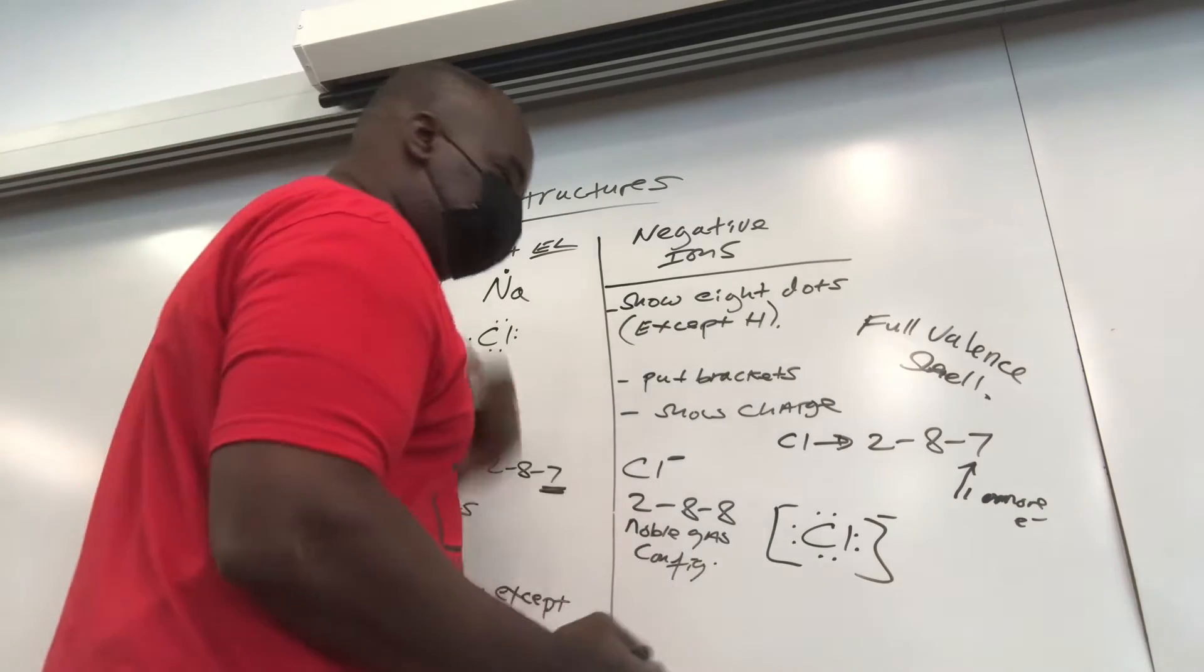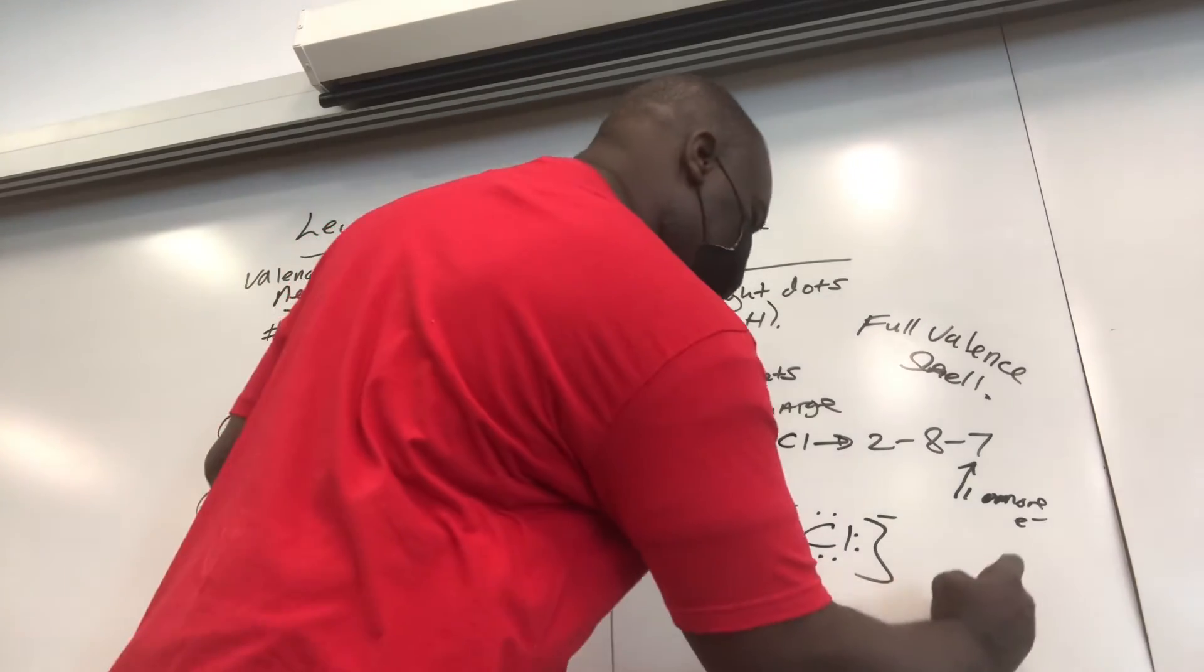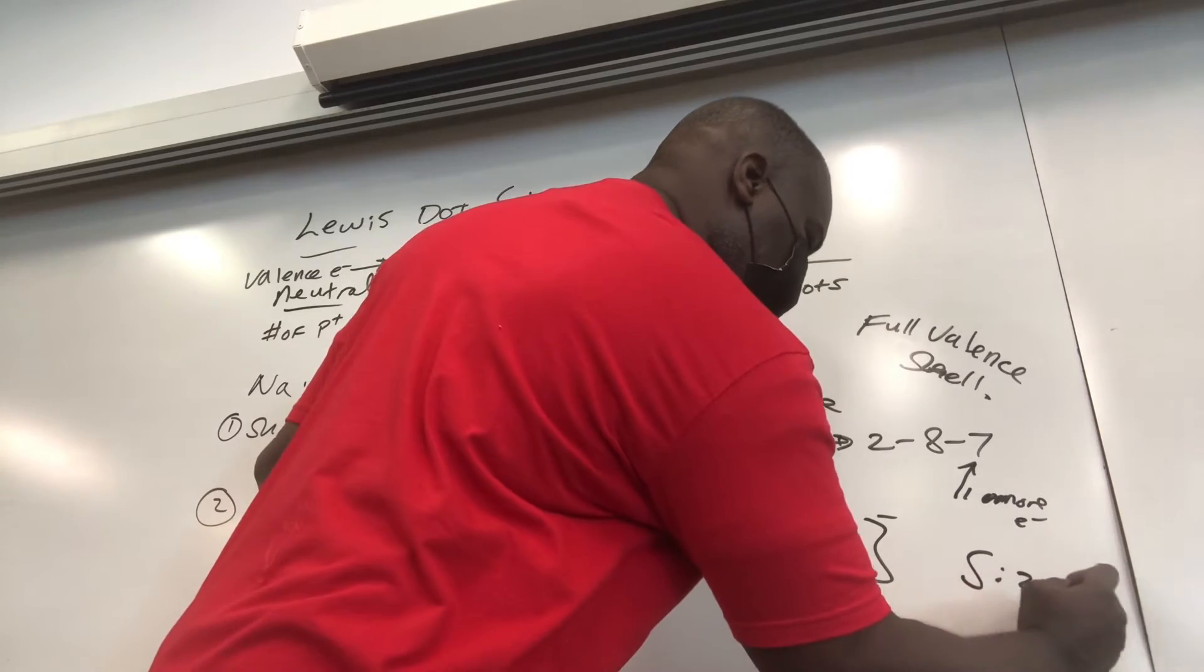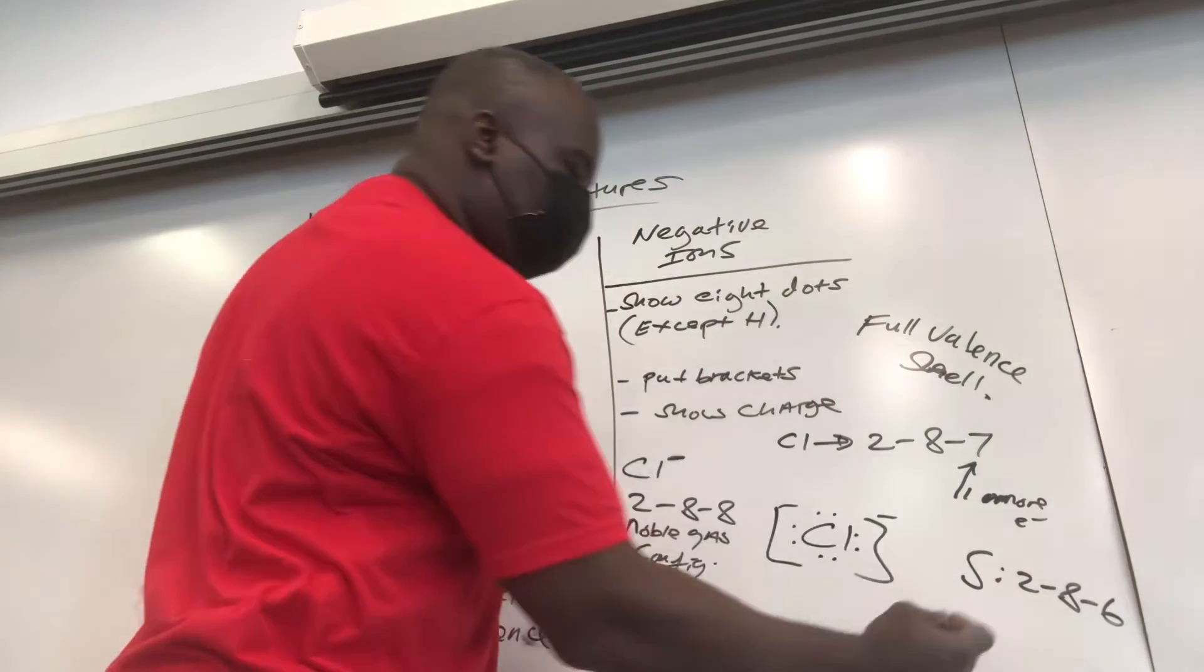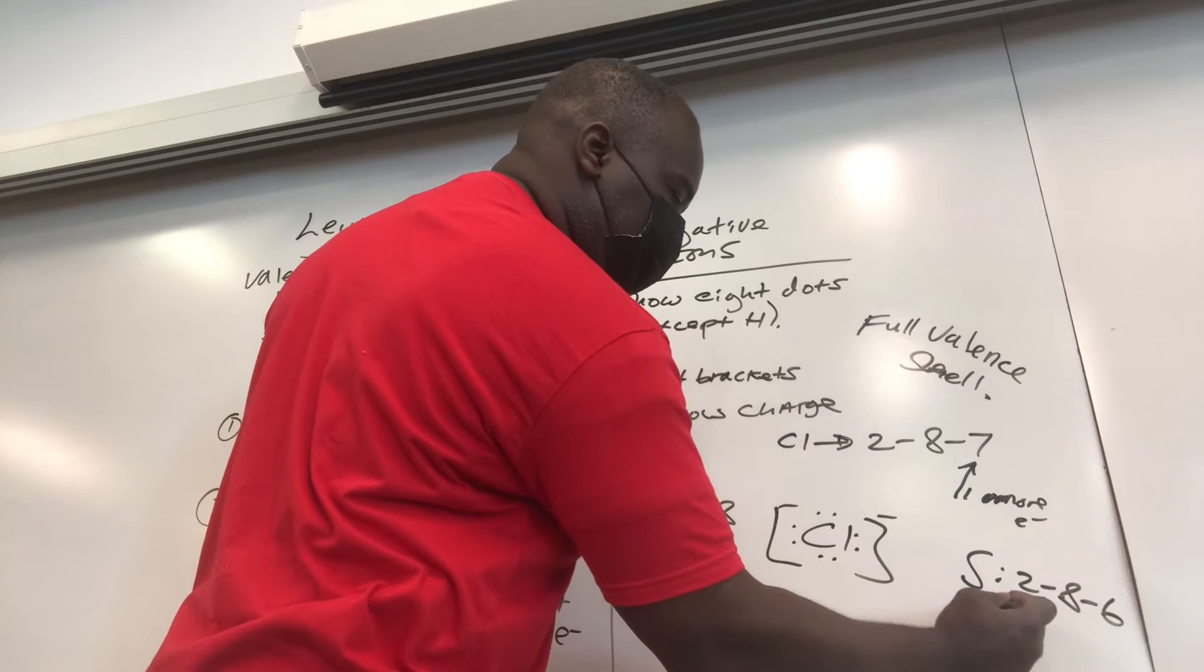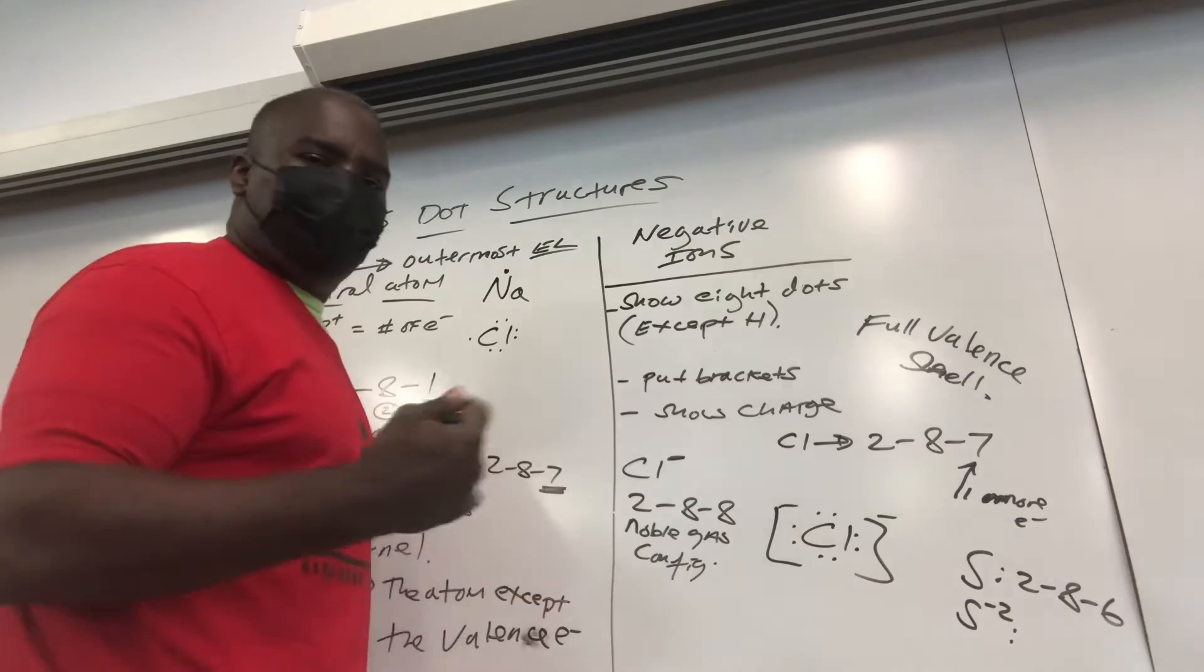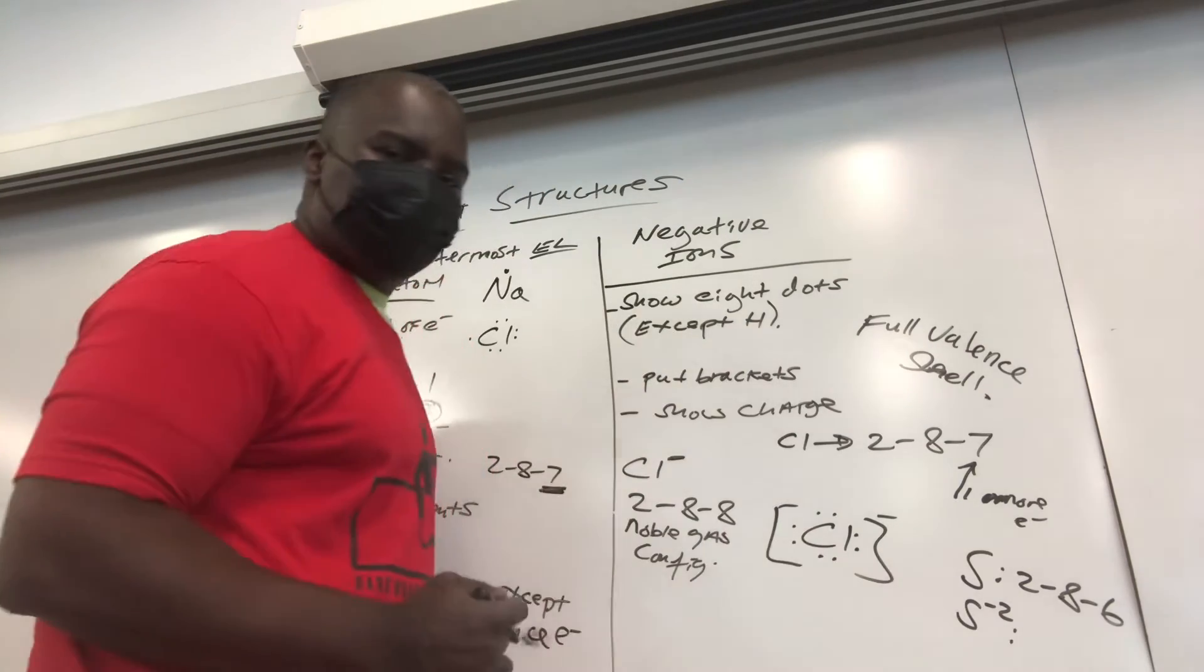Let's say you got sulfur. Sulfur is 2-8-6. Now if they ask you to do the sulfide ion S minus 2, what's going to happen? He's trying to get how many in the valence shell? Eight in the valence shell. So what's he going to do? He's going to gain two more electrons. So he's going to become 2-8-8.